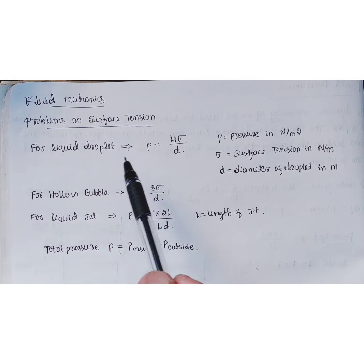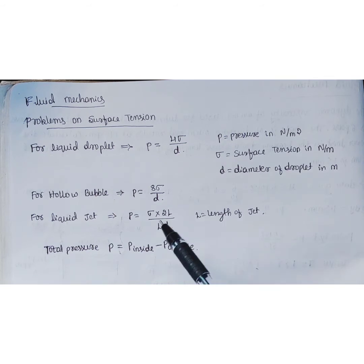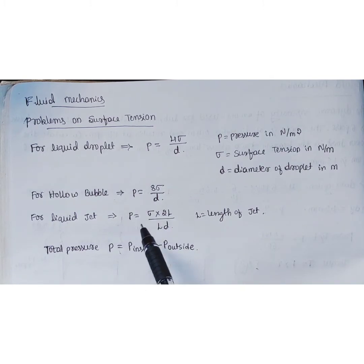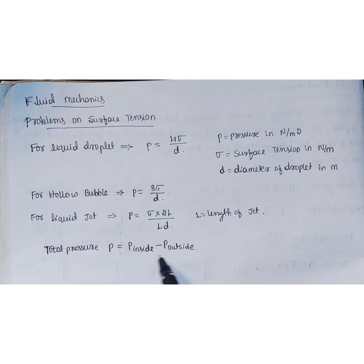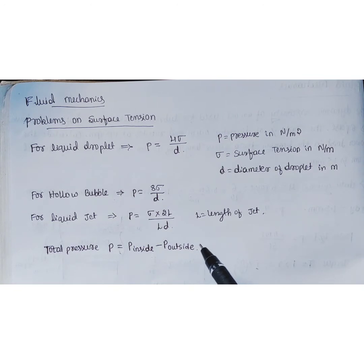This equation applies only to a liquid droplet. For a hollow bubble — like a soap bubble — we have two surfaces, one inside and one outside, both exposed to atmospheric air. Considering these two surfaces, the equation is p = 8σ/d. For a liquid jet, p = σ × 2L / (L × d). Because the hollow bubble has two surfaces, the total pressure is taken as p_inside minus p_outside.